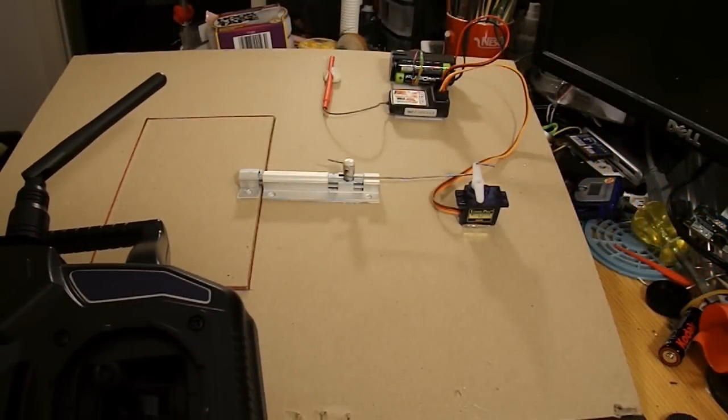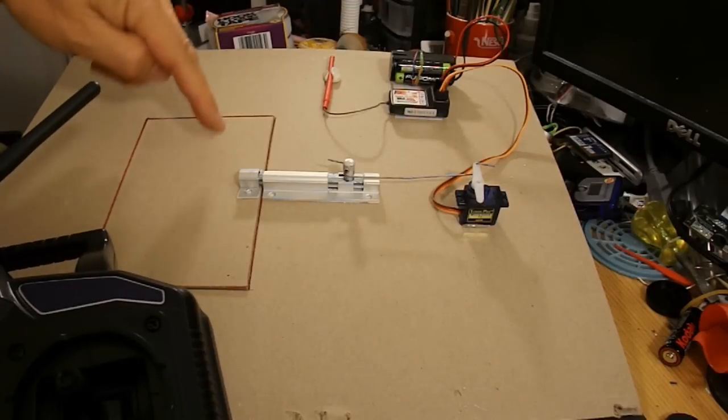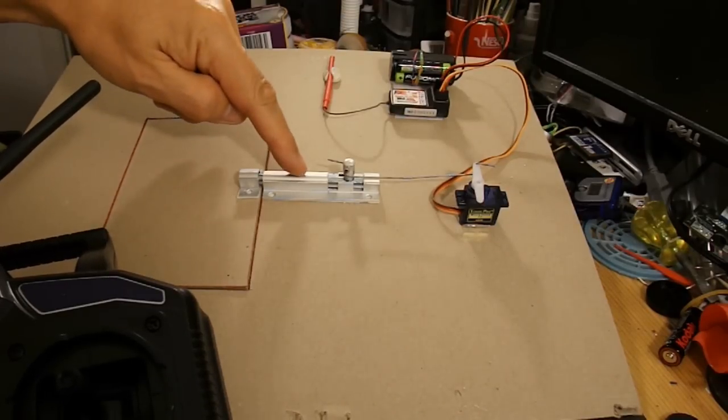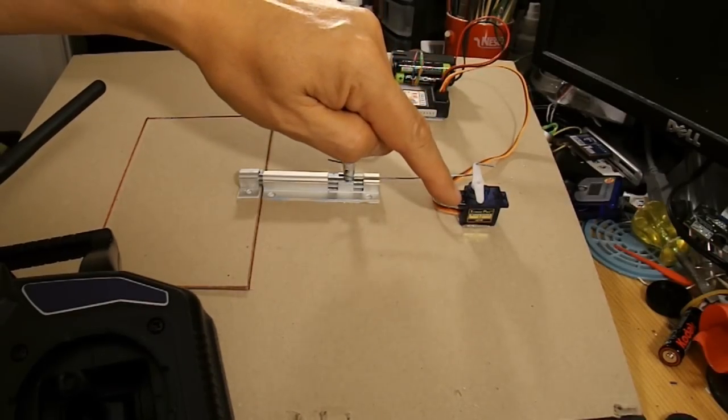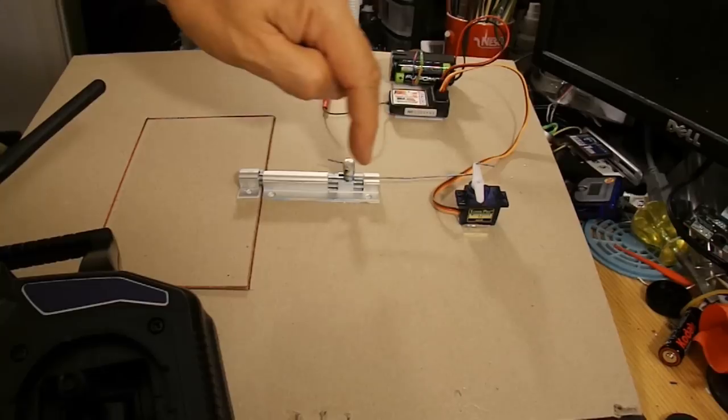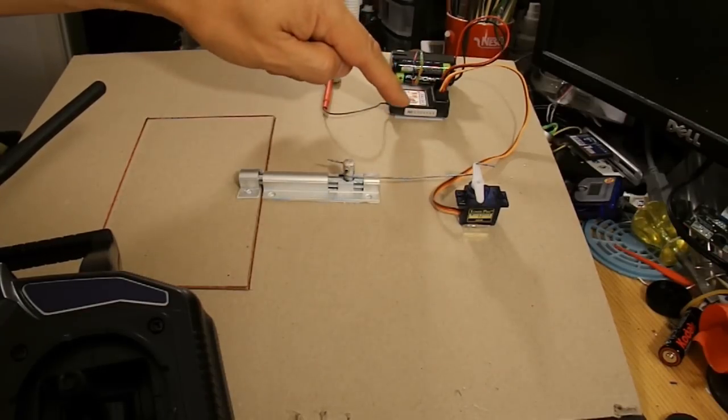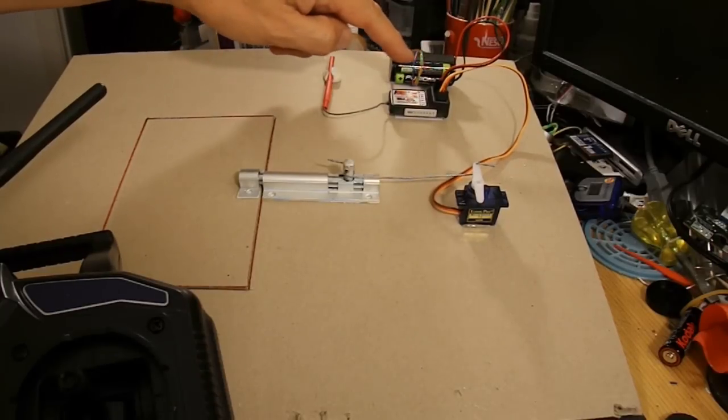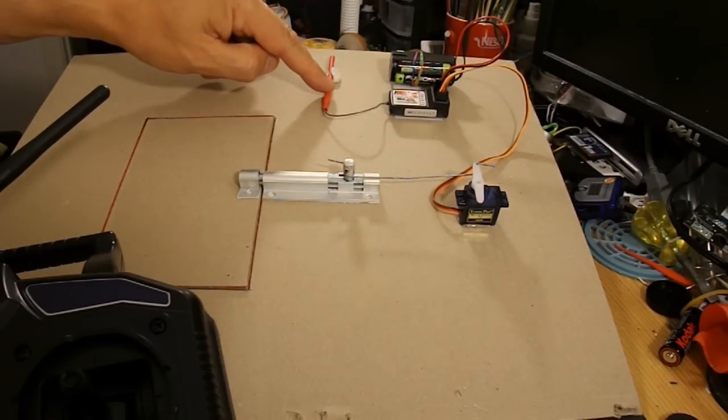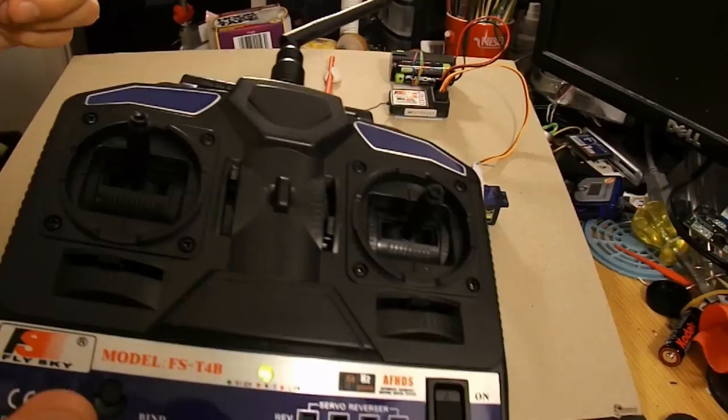All set up. So this is our door. This is my sliding bolt. That's my servo. Bit of bent paper clip between the two. That's my radio receiver. Battery. Aerial. Here's my transmitter.